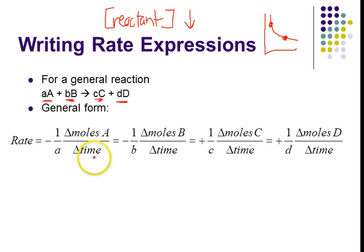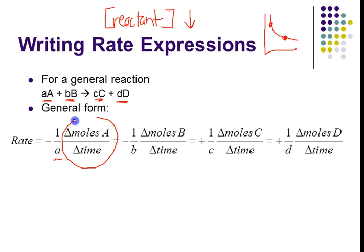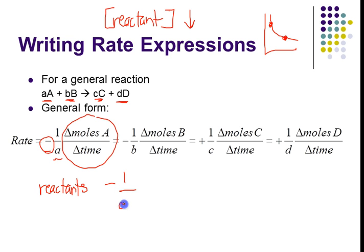So what you end up doing when you write these rate expressions: you do 1 over the coefficient, change in the moles of that substance over the change in time. But if it's a reactant, we have to put in a negative sign because we want the rate to come out to be a positive value. So for the reactants, you have a negative sign, 1 over that coefficient, the change in moles over the change in time.